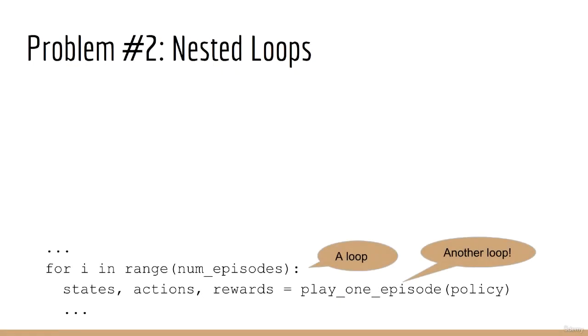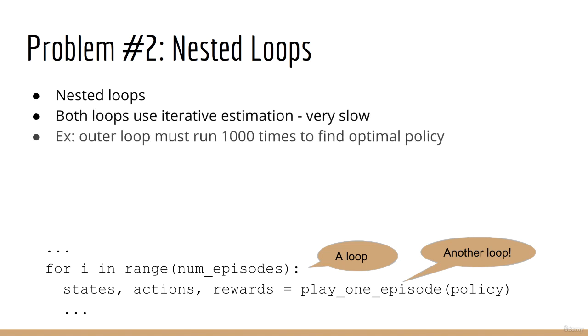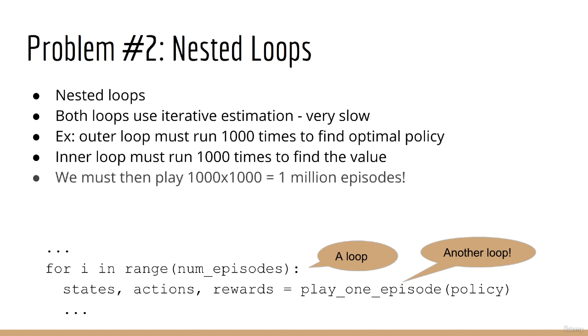But there is a second problem. Each policy evaluation step is a Monte Carlo estimation, which means that we must calculate a large number of samples. But now we've nested this loop inside another loop. What's the effect of this? Well, let's say our policy iteration loop needs to run 1000 times to find the optimal policy. Now let's say our inner loop needs to run 1000 times in order to get an accurate estimate of Q of S A. How many episodes do we have to play? The answer is 1000 times 1000, which is 1 million. As you can see, our data usage is not efficient, and the number of times we need to play the game grows quite fast.